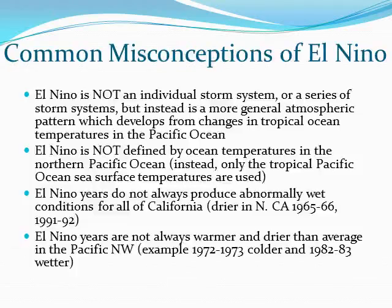A few common misconceptions of El Niño are: El Niño is not an individual storm system or a series of storm systems, but instead is a more general atmospheric pattern which develops from changes in tropical ocean temperatures in the Pacific Ocean. El Niño is not defined by ocean temperatures in the northern Pacific Ocean; only the tropical Pacific Ocean sea surface temperatures are used. El Niño years do not always produce abnormally wet conditions for all of California — for example, it was drier in northern California during 1965-66 as well as 1991-92.